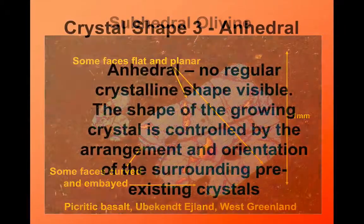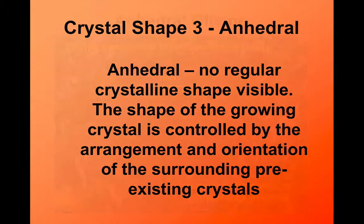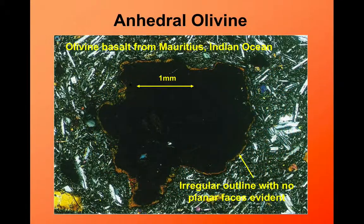Far more common is the term anhedral. Anhedral means without sides. In these, we don't see any regular crystal shape. The crystals have grown here with lots of other crystals growing around them, so there isn't time or space for the crystals to grow into their preferred form. This is where we tend to get just a mass of relatively shapeless crystals. We see an olivine here where there's no regular flat sides — this would be described as an anhedral crystal.